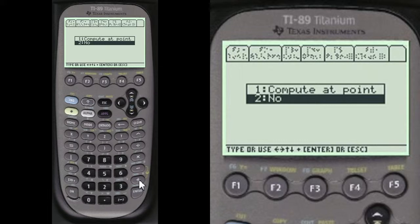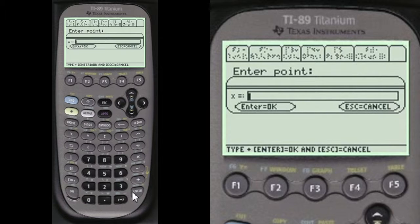Now we want to compute it at a point. We can do that too. We can press 1 here. We can go to the and enter our point. Let's enter alpha 1, alpha 5, and alpha 6.